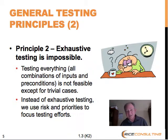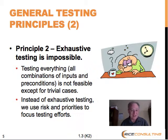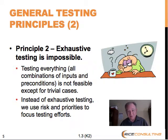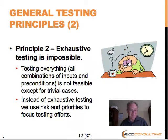Instead of trying to test everything, what we tend to do is apply some helpful approaches. We tend to focus on risk. We may do techniques such as pairwise testing to reduce the number of combinations. We may also do things like cause-effect graphing and take more of a logic-based approach to optimizing our testing.